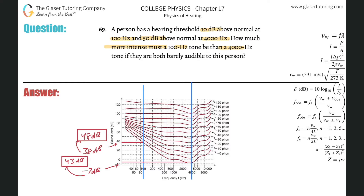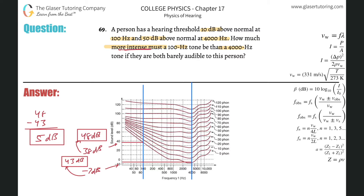Now, depending upon your estimations on the graph, you could have a slightly different number, but we'll be close. So what's the difference in decibel value here? The 100 hertz is more intense — it's higher in decibels. So when we subtract 43 from 48, we get a value of five decibels. This is how much greater the sound intensity level is. But now they want to know how much more intense, so we have to do our conversion to intensity.